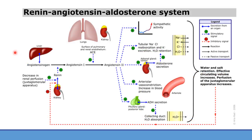The kidneys release renin; angiotensinogen comes from the liver; the ACE enzyme comes from the lungs — though the main point is that low blood volume or flow triggers renin release from the kidneys. ACE converts angiotensin 1 to angiotensin 2, which is the main mover in the RAAS and the primary target of many antihypertensive drugs.